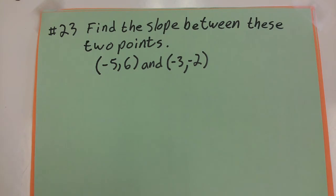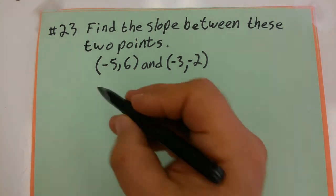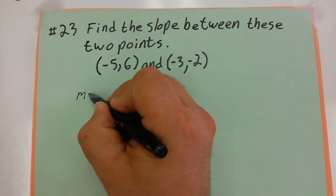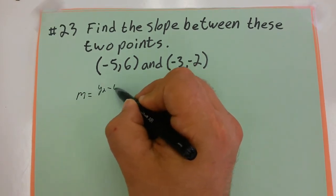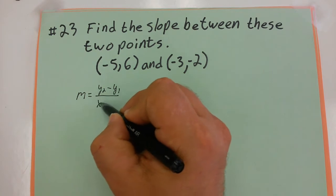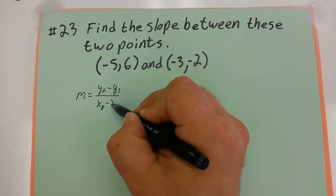One of the basic formulas in mathematics is the slope formula: slope of a line is y sub 2 minus y sub 1 over x sub 2 minus x sub 1.